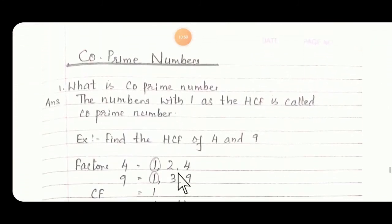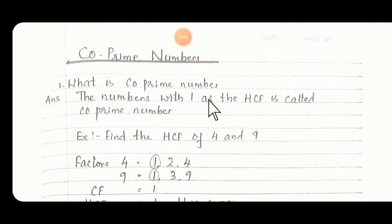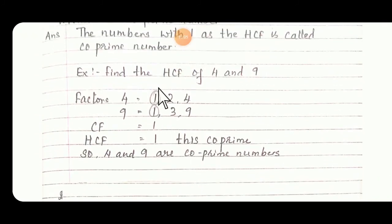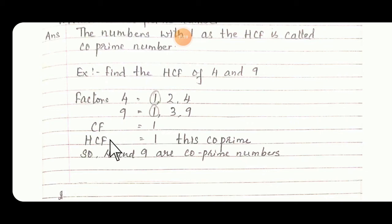Then co-prime numbers. What are co-prime numbers? The number with 1 as the highest common factor is called a co-prime number. Let us take an example. Find the HCF of 4 and 9. First write down the factors: 1, 2, and 4. Then 9: 1, 3, and 9. Which is the common factor among 4 and 9? That is 1. So HCF will be 1 — this is called co-prime. The numbers 4 and 9 are co-prime numbers.